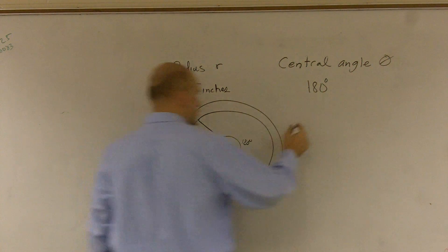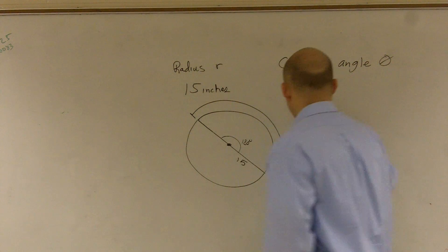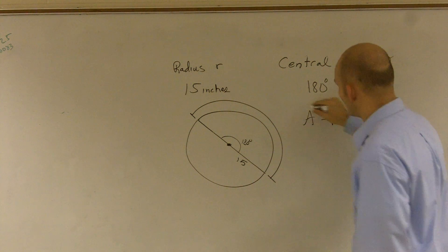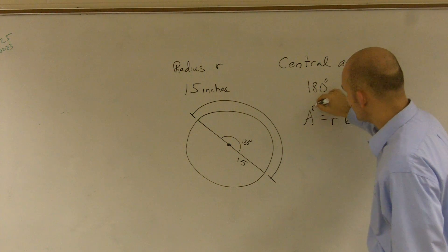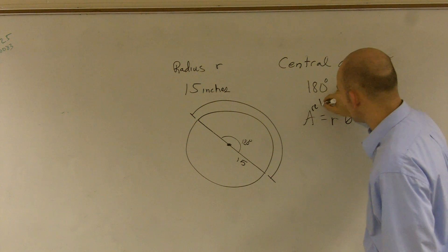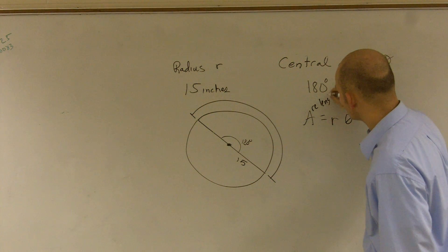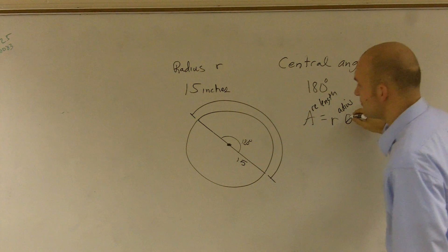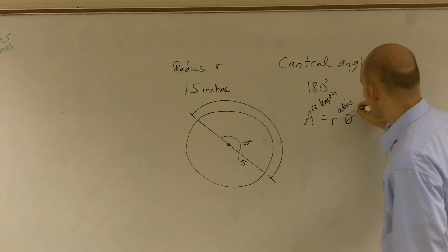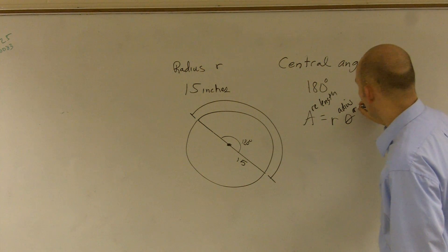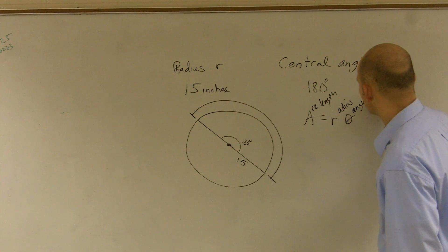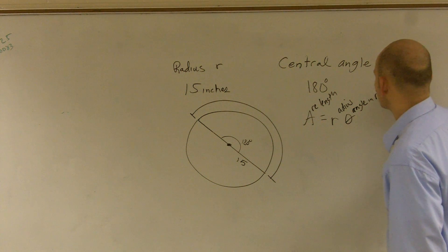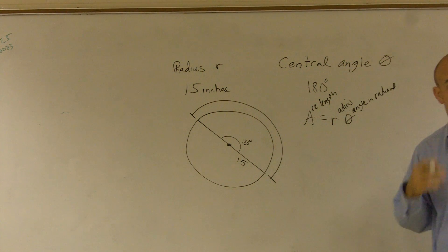You guys have to remember there's a formula: a equals r times theta. A is our arc length, r is our radius, and theta is our angle in radians.